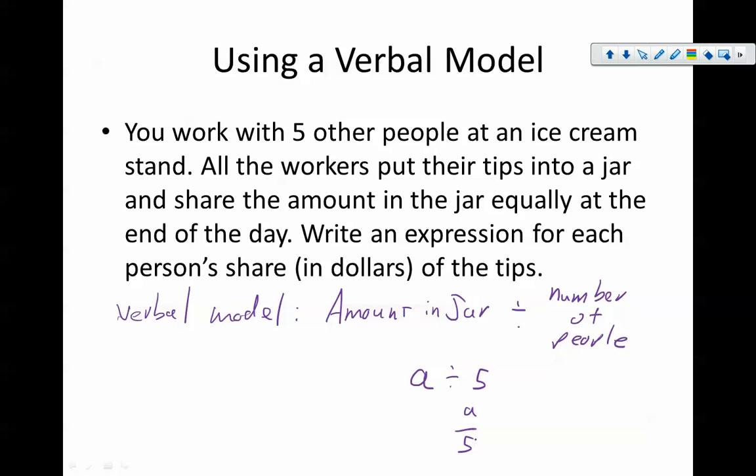Somebody really needs a custodian. I don't know if you guys could hear that, but you probably could. Okay, so here we have the amount in the jar, which we call A because we didn't know that number, the number of people which is five, and so it's A divided by five.